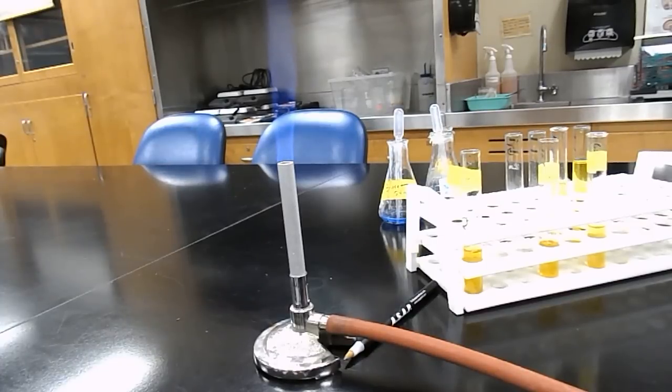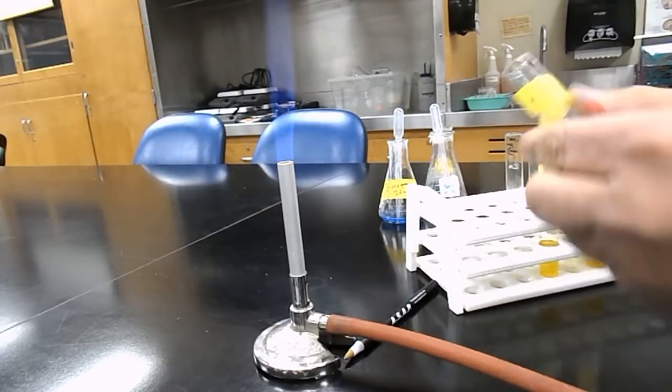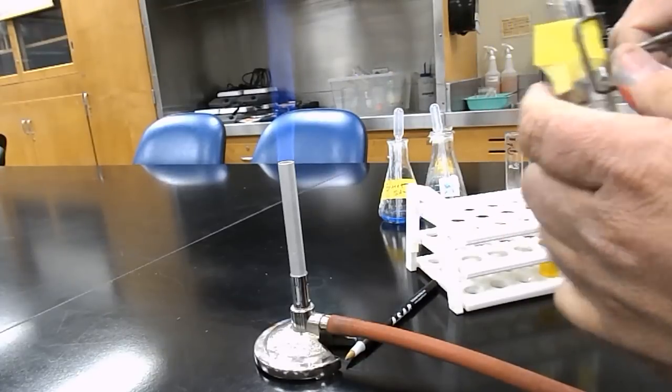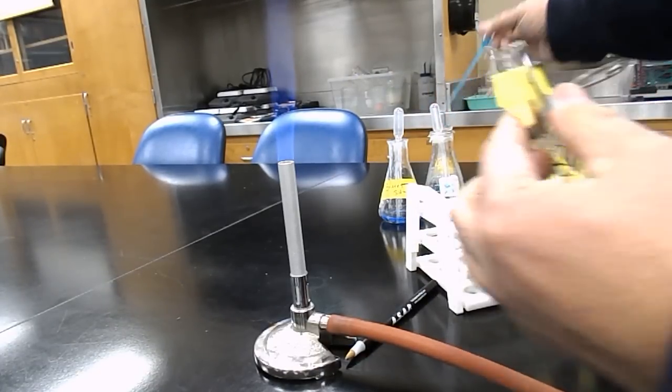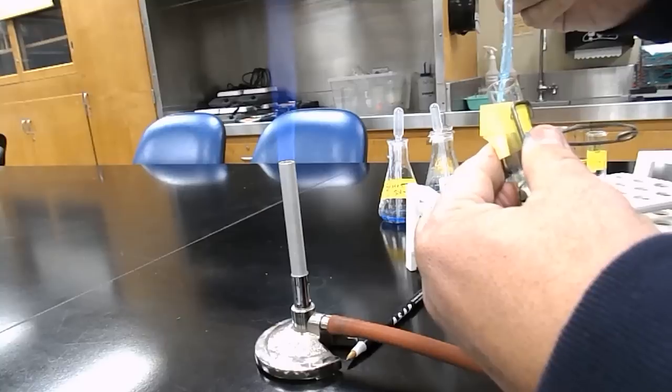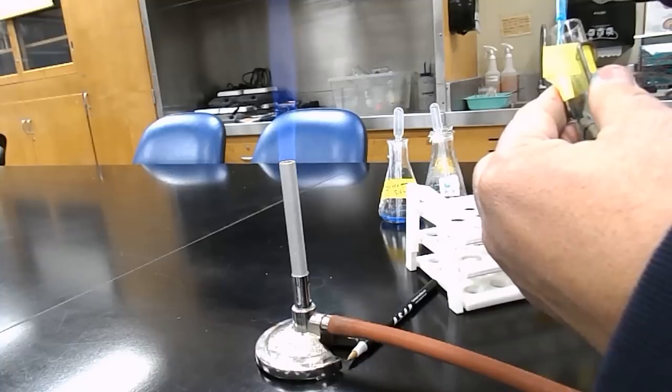So in this simple qualitative test we're going to check for the presence of glucose by adding some Benedict solution to a sample of urine. This is synthetic urine.